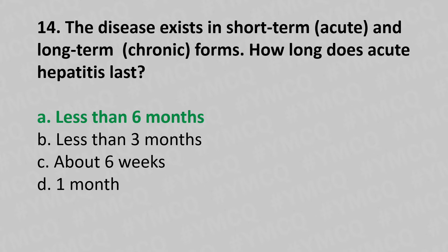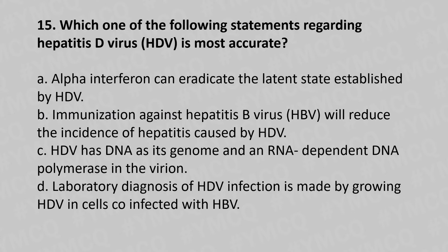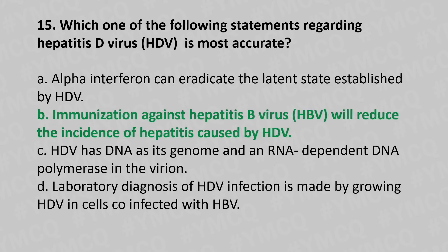Now let's move to question number 15. Which of the following statements regarding hepatitis D virus (HDV) is most accurate? Option A, alpha interferon can eradicate the latent state established by HDV. Option B, immunization against HB virus will reduce the incidence of hepatitis caused by HDV. Option C, HDV has DNA as its genome and RNA-dependent DNA polymerase. Option D, laboratory diagnosis of HDV infection is made by growing HDV in cells co-infected with HBV. And the answer is... Option B, immunization against HB virus will reduce the incidence of hepatitis caused by HDV.